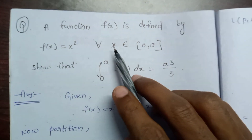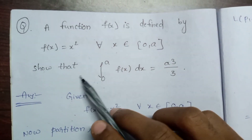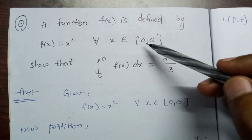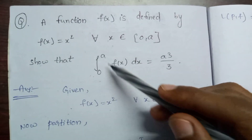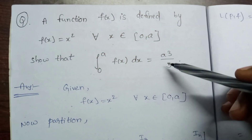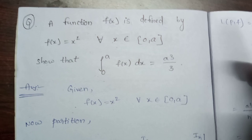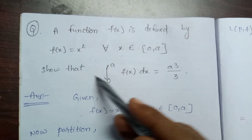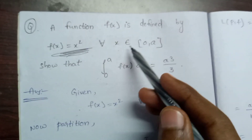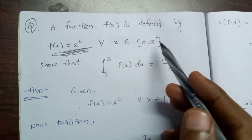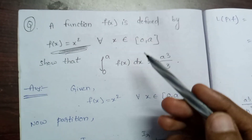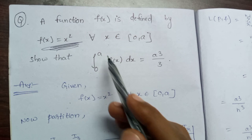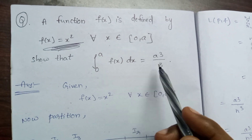A function f(x) is defined by f(x) = x² for all x belonging to the closed interval [0, a]. We need to show that the integration from 0 to a of f(x) dx is equal to a³/3. To do this, we perform a partition of the interval [0, a].